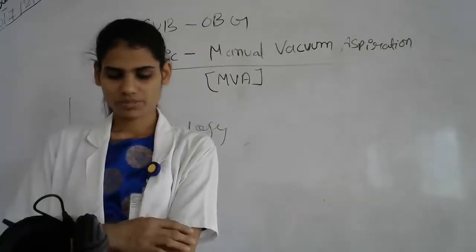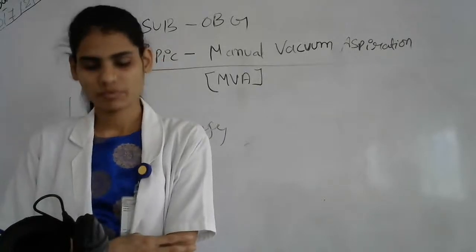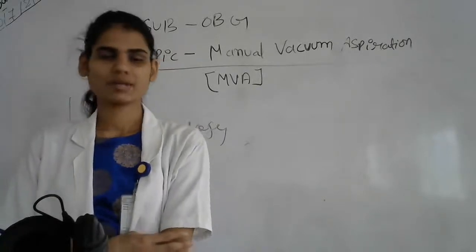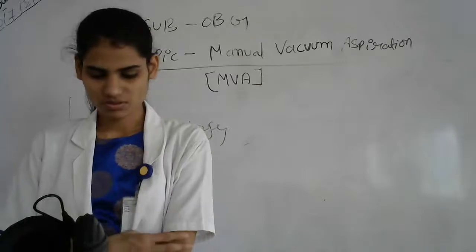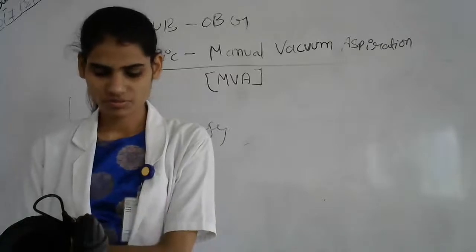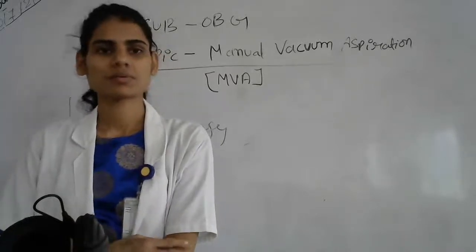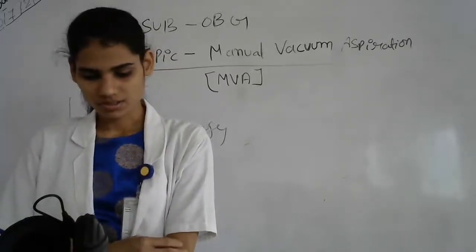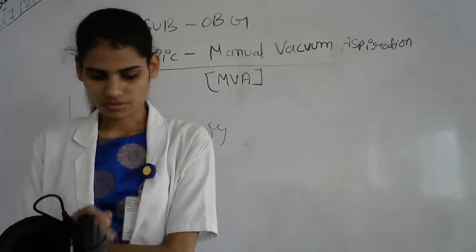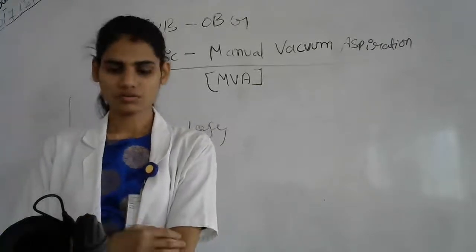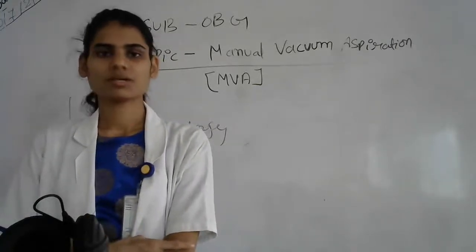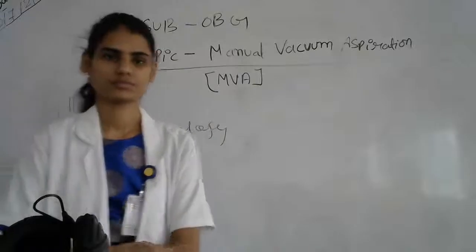So this is the procedure of manual vacuum aspiration. The manual vacuum aspiration is an aseptic procedure done when a woman is having a miscarriage or abortion before the first trimester. This is all about manual vacuum aspiration. Thank you, students.